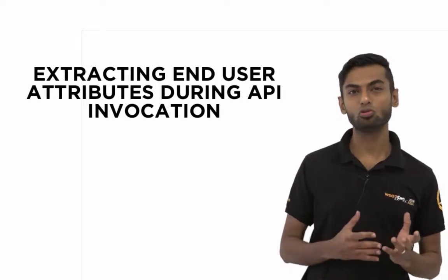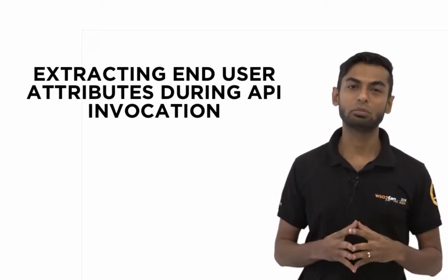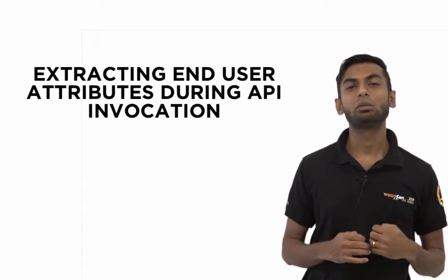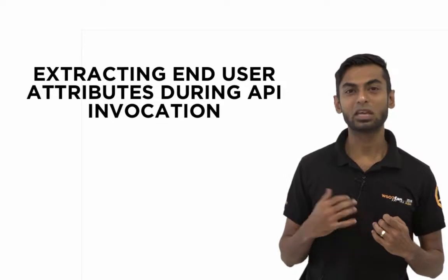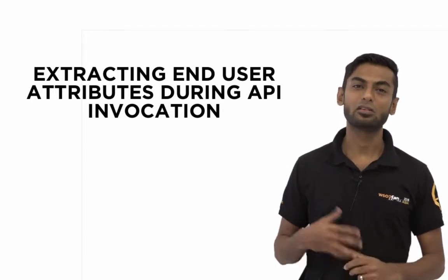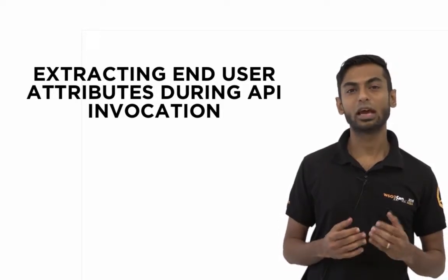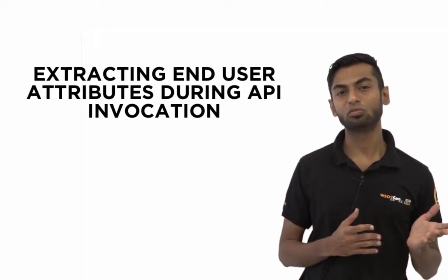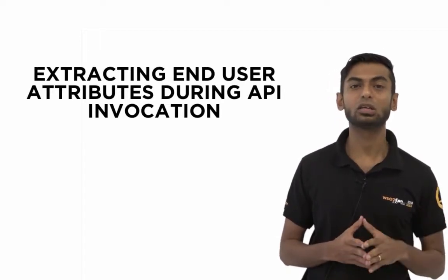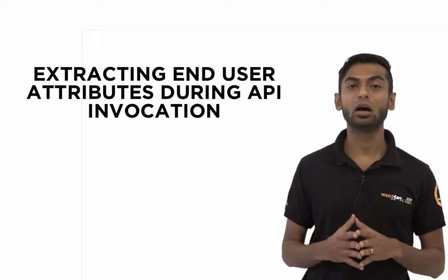One of the first concepts I'd want to talk about is passing user attributes to the backend in the API invocation. Usually an API-invoking application does not have access to the attributes of the user that is actually using that application, and if you look at the actual API call sent by that application, it only contains the access token which is used to identify the application.